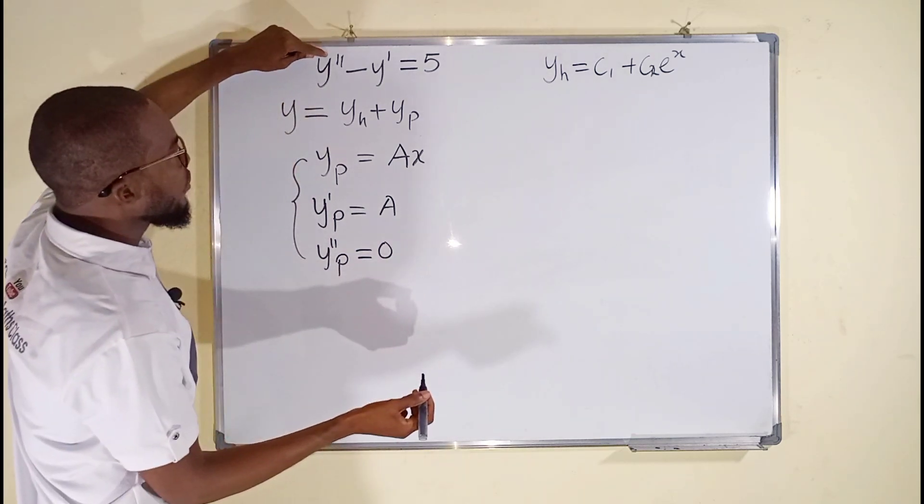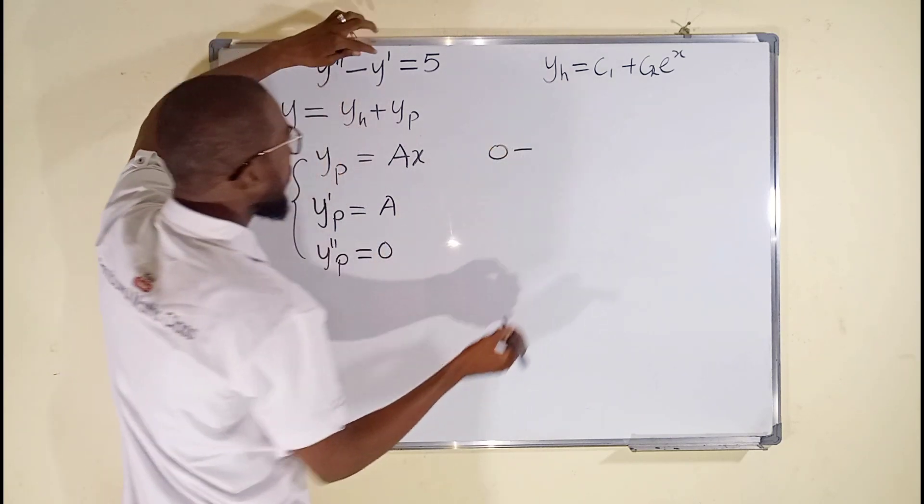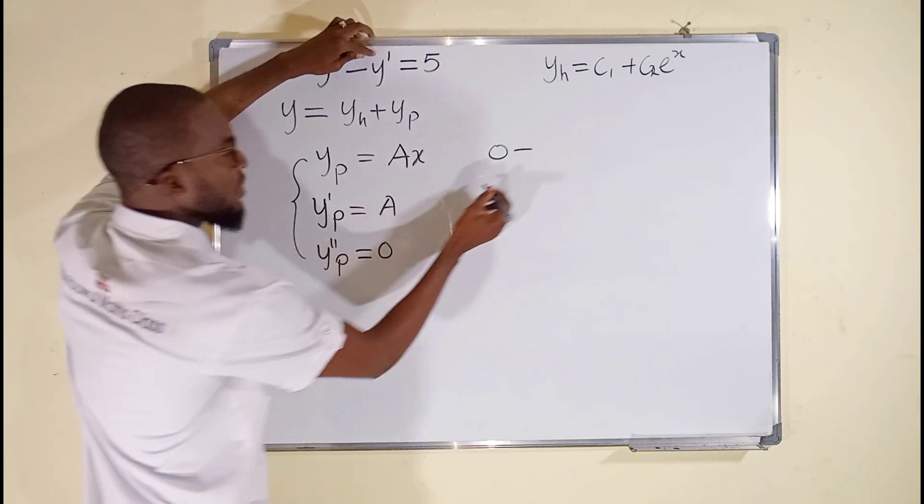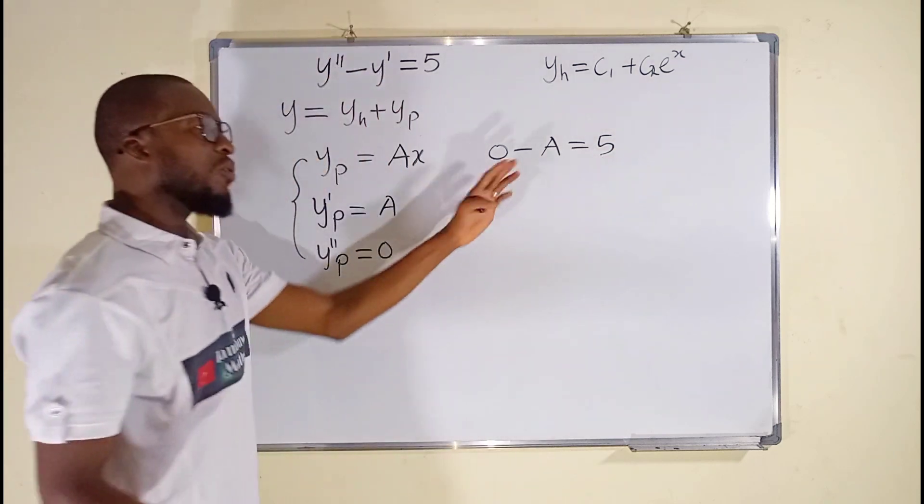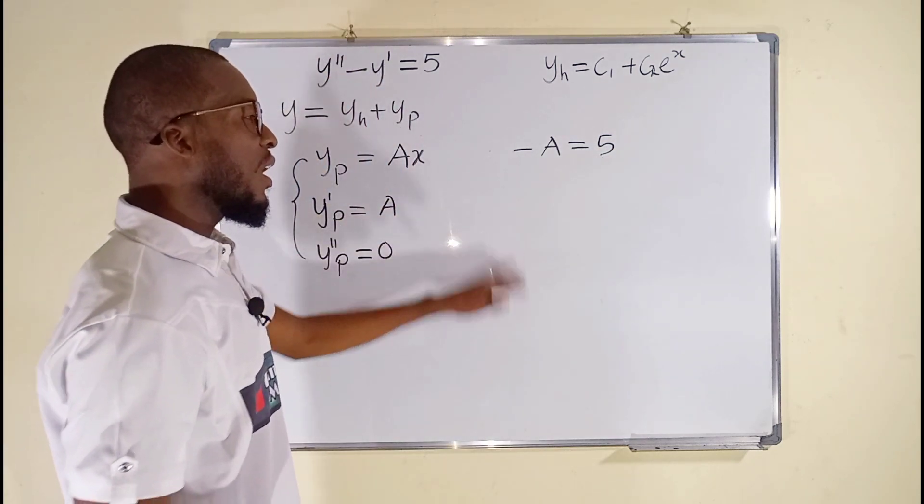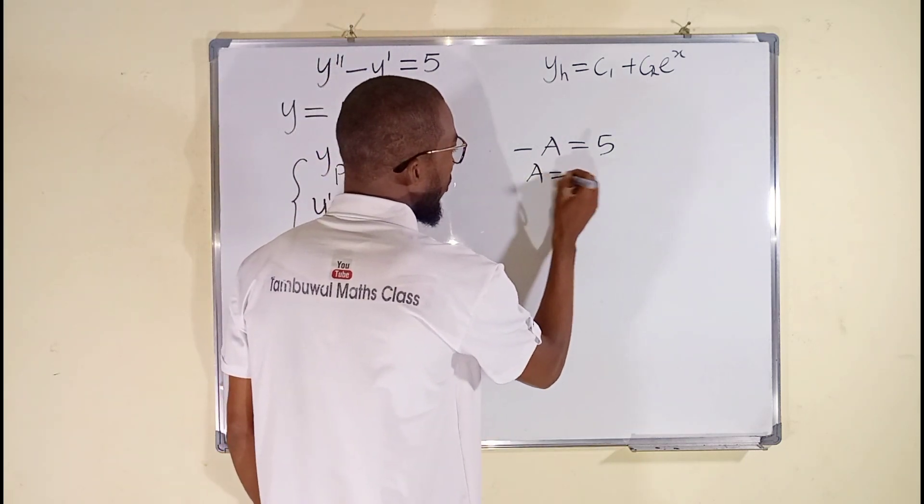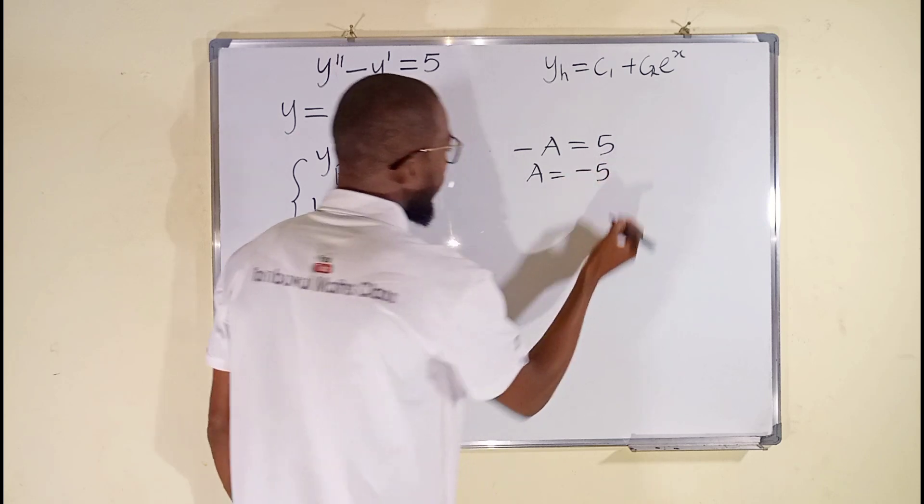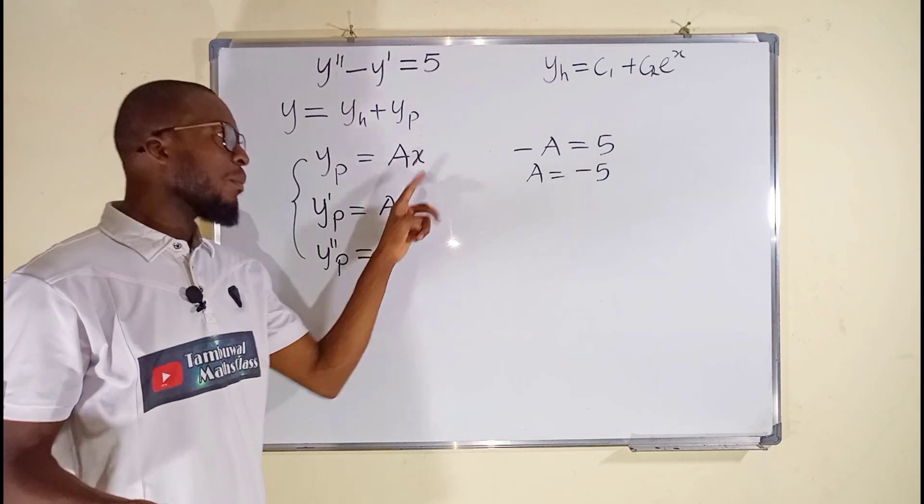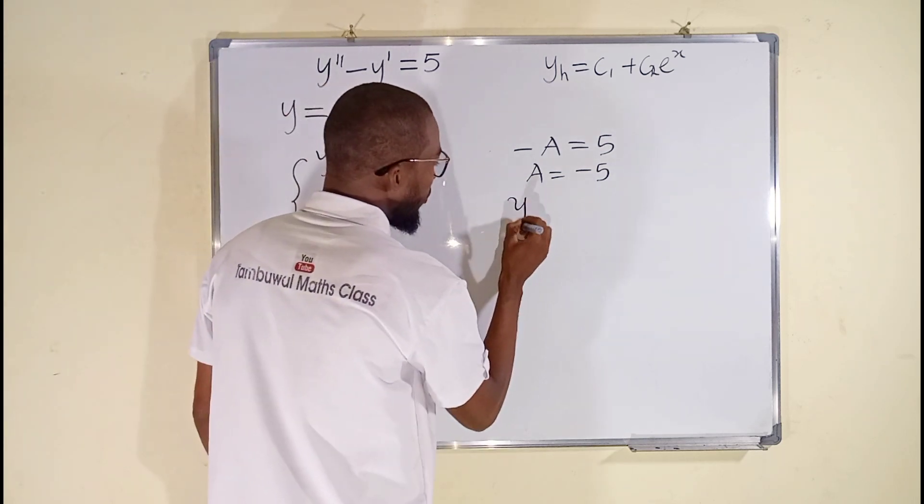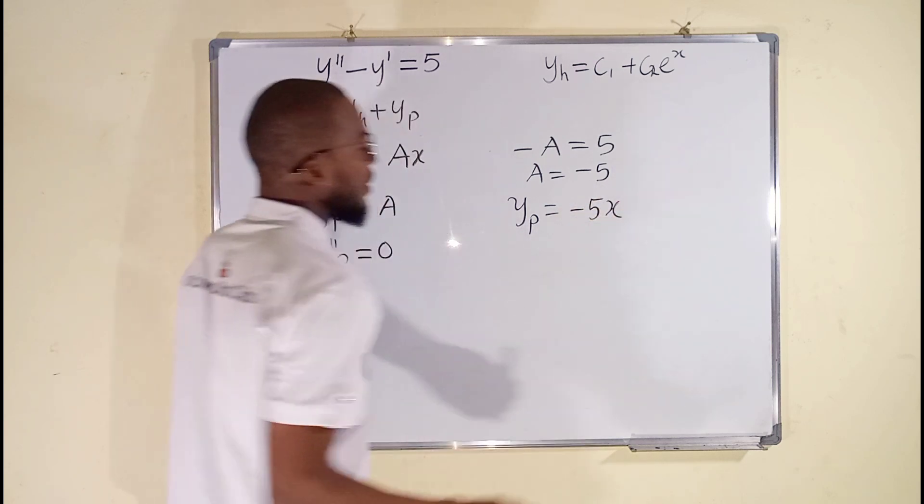So for an original equation, you see, we have y double prime, which is equal to zero. We have minus y prime, y prime is a, and this is equal to five to the right. You can see zero minus a is just negative a. And if you multiply both sides by negative, you have a equals negative five. This implies that y sub p is equal to negative five multiplied by x. So y sub p is equal to negative five x.